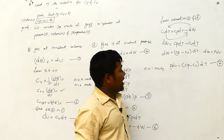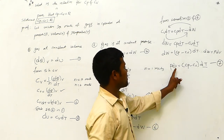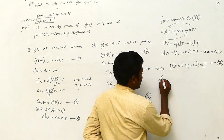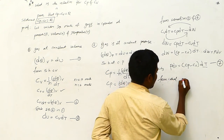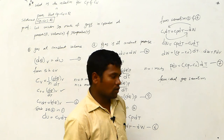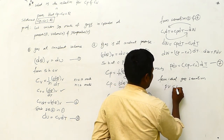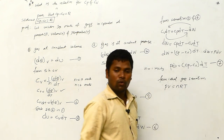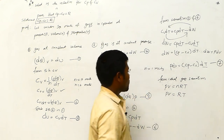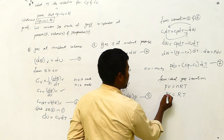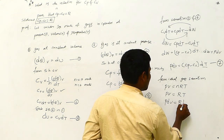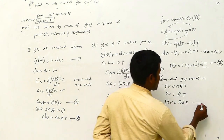Substituting P·dV equals R·dT into equation seven: R·dT equals (Cp minus Cv)·dT. Dividing both sides by dT: R equals Cp minus Cv, therefore Cp minus Cv equals R. This is equation number eight.